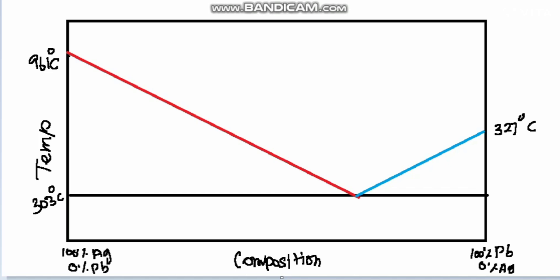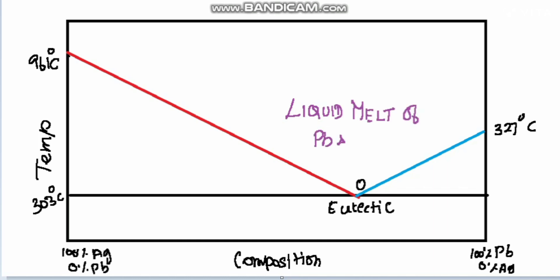At point O, which is called the eutectic point, solid lead and solid silver will be in equilibrium with the liquid melt. That point is called the eutectic point, where solid lead and solid silver are in equilibrium with their liquid melt. Above this area, only the liquid melt of silver and lead will exist — there are no solid phases here.